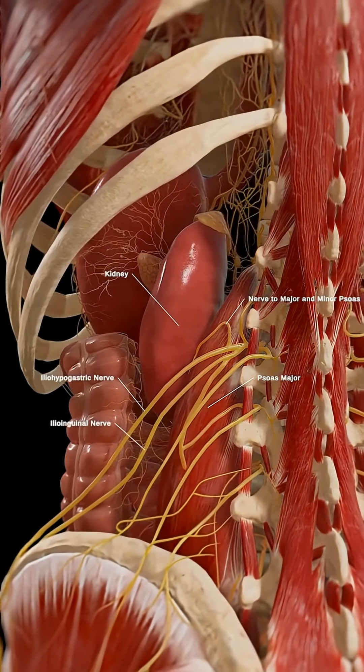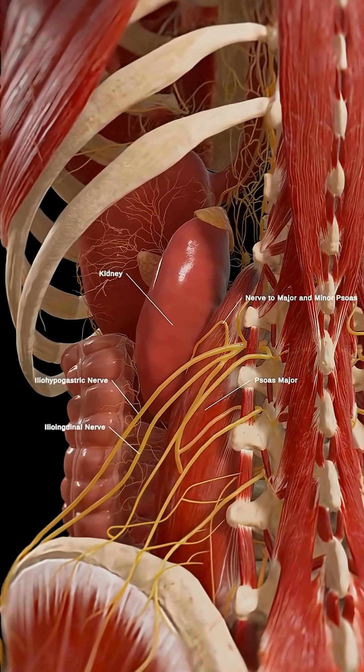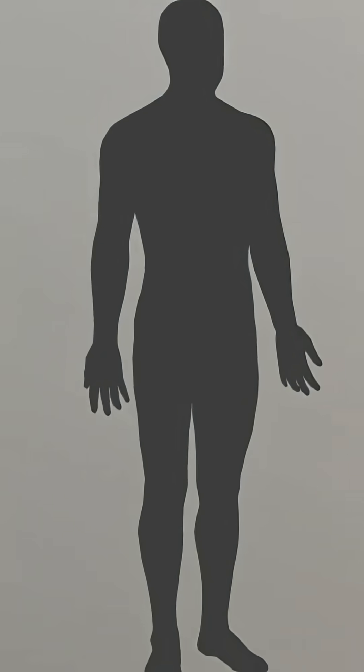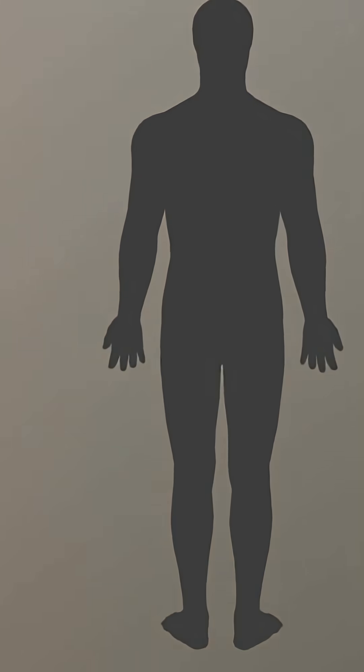Notice their position relative to the psoas major muscle. They are highly vascularized for a reason. While they make up less than 1% of your body mass, they receive approximately 20% to 25% of your total cardiac output.